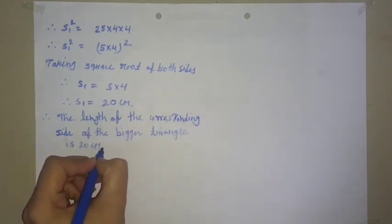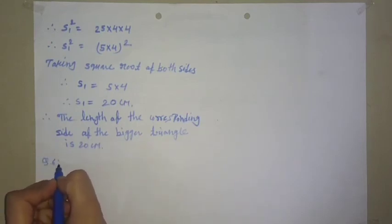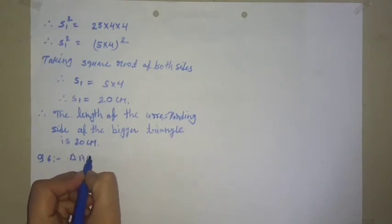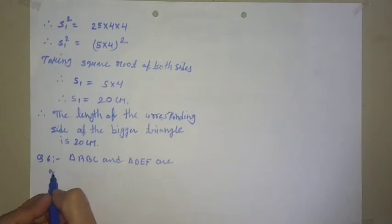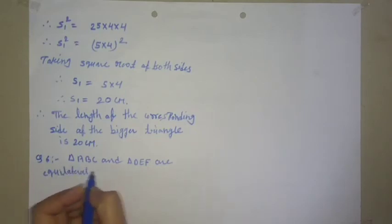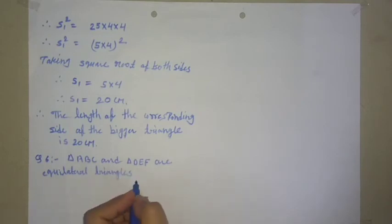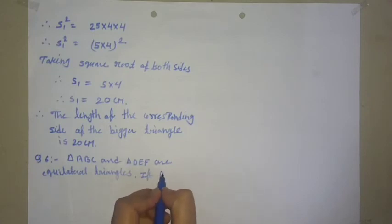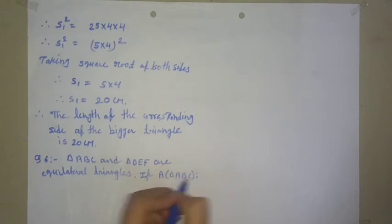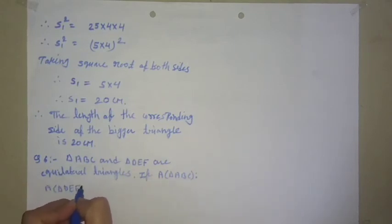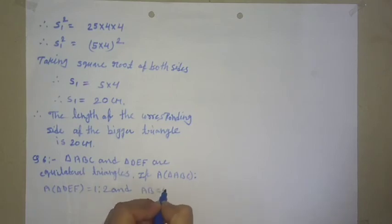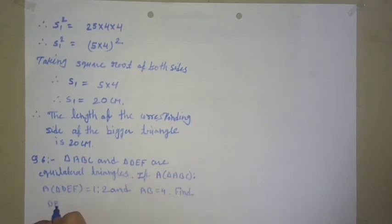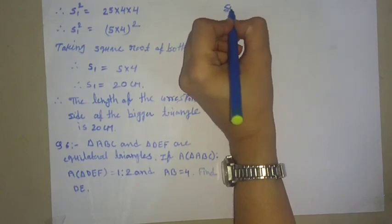Therefore, the length of the corresponding side of the bigger triangle is 20 centimeters. Question number 6: Triangle ABC and triangle DEF. Area of triangle ABC to area of triangle DEF equals 1 is to 2, and AB equals 4. Find DE. Solution.